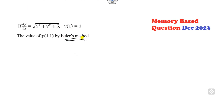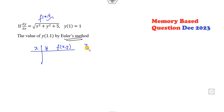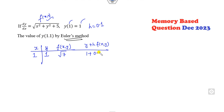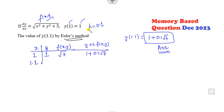Now this is the Euler method. I received two different Euler method questions and I can solve both. The Euler method formula is: y_{n+1} = y_n + h·f(x_n, y_n). For the first question, taking x = 1, y = 1, f(x,y) = √7, and h = 0.1, the next value is y(1.1) = 1 + 0.1·√7. You can compute this answer using the formula directly.